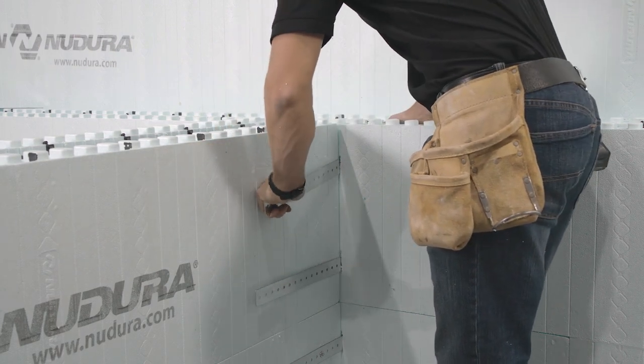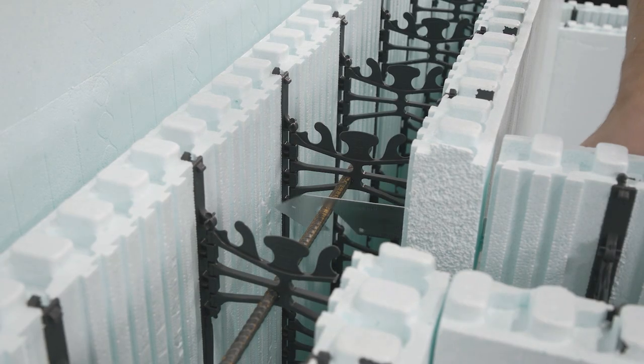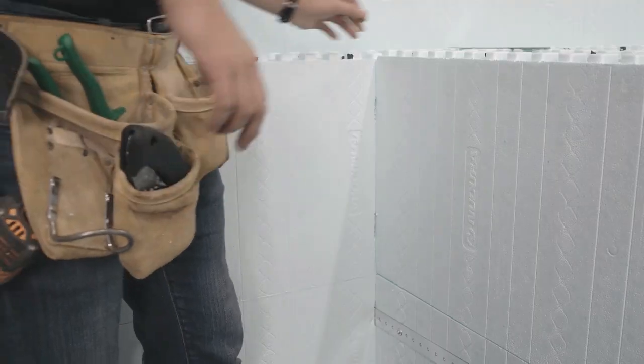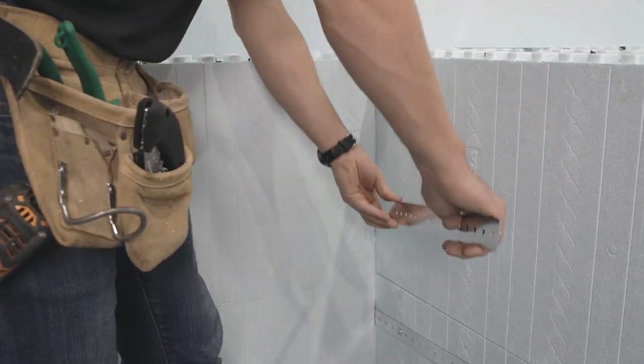Next, install the T-straps on the opposite side of the T-wall.